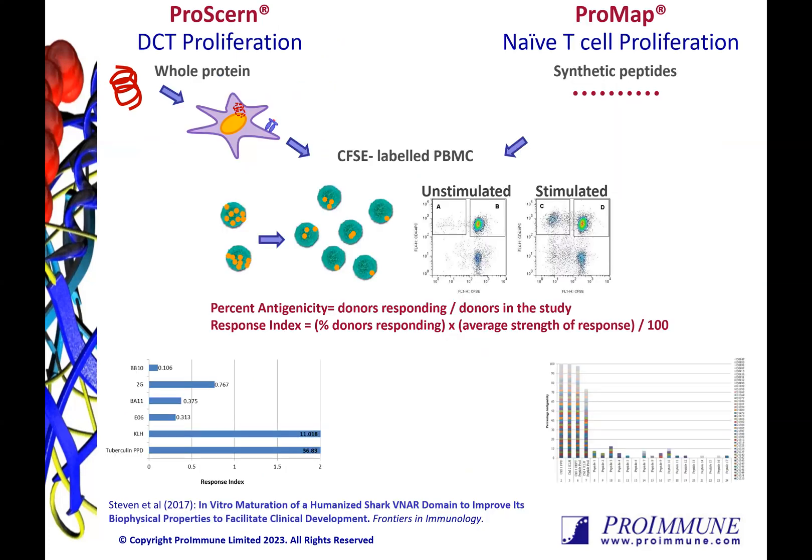T-cell proliferation assays are the gold standard for assessing T-cell activation in the immunogenicity field. We offer two different versions, including the ProCern DCT for understanding whole protein immunogenicity and overall T-cell epitope content, and the ProMAP naive T-cell assay to evaluate individual peptide epitopes. Both tools utilize CFSC, which is an intracellular staining dye that gets incorporated evenly into the daughter cells every time the cell divides. This is a very sensitive flow-based method that measures the total proliferation over a seven-day period. We report the data as percent antigenicity, which are the number of donors responding out of the total number tested. We also provide a response index, which takes into account the strength of the response as well.